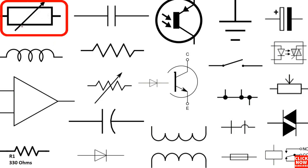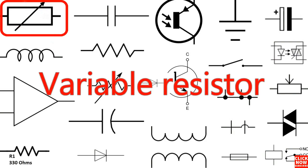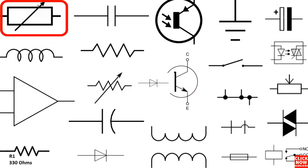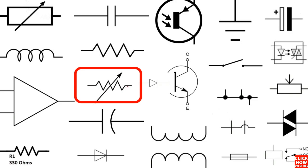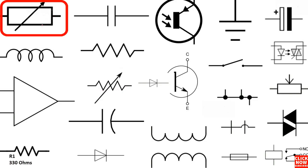The first symbol is a variable resistor. This symbol means variable resistor because we have this arrow here. Here also we have another symbol for the variable resistor with this arrow. Basically there are two symbols for the resistor — this is the universal symbol for the resistor and this one is the US resistor symbol.